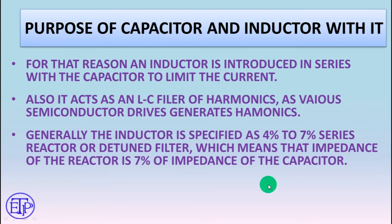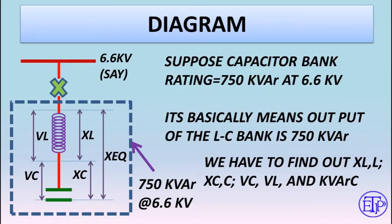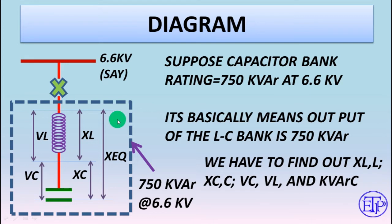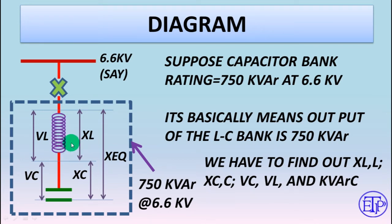In this video, we will further see how those values are calculated. In the diagram, suppose this is the 6.6 kV bus and this is the capacitor — an inductor is connected in series with the capacitor. Suppose you have 750 KVAR at 6.6 kV. The entire capacitor-inductor setup will give you 750 KVAR and the voltage across the terminals will be 6.6 kV. We need to find the voltage across the capacitor — whether it is 6.6 kV or higher or lower — accounting for the voltage drop due to the inductor.